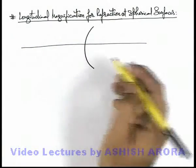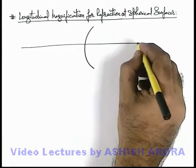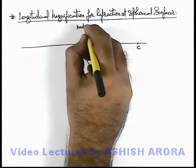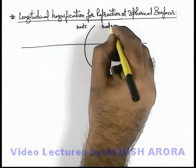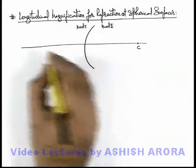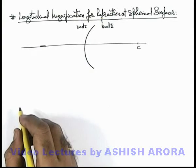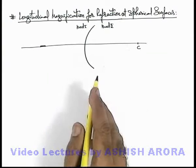Now say if this is the optic axis with the center for the spherical surface and there are two media, medium 1 and medium 2, and say an object is placed which is having a small width along the optic axis.